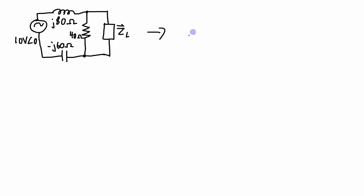So basically I'm going to be converting that circuit into something that looks like this: a current source with some equivalent impedance connected to that load.